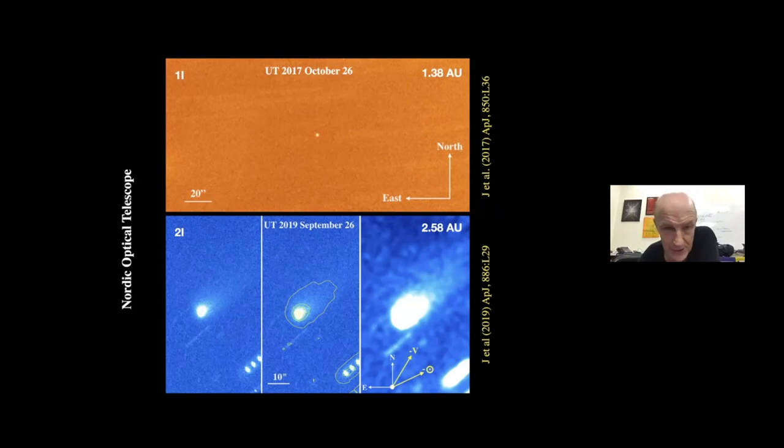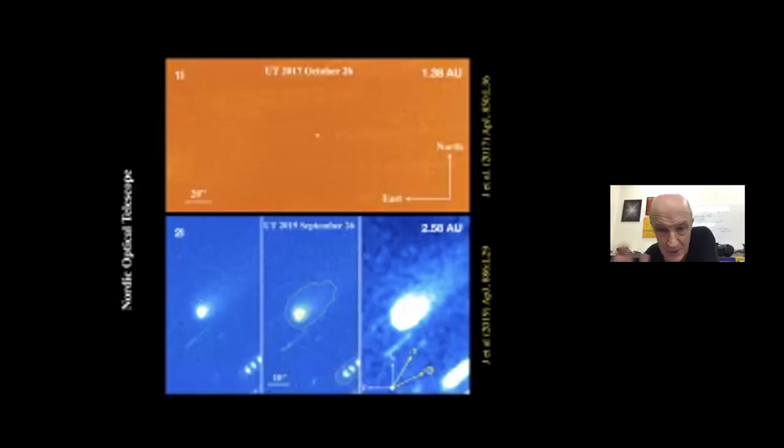The second one is Borisov. Second one is completely different. Here are comparable integrations from the same telescope, showing that it's clearly active, clearly ejecting material. And in fact, it looks just like in almost every regard, a solar system comet. This is what I would have expected to see from an interstellar interloper, and Oumuamua is not.